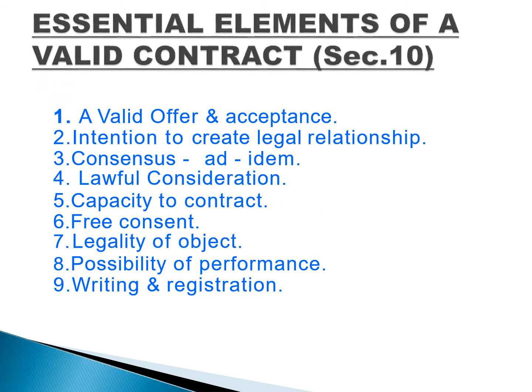The essential elements of a valid contract are: first, valid offer and acceptance — both features must be present, an offer from one party and duly accepted by the other. Next is intention to create legal relationship — both parties must intend to create a contract. Then consensus ad idem, which we discussed. Next is lawful consideration — the something in return must be lawful. For example, we cannot make a contract where the consideration is drugs, because selling drugs is not legal.